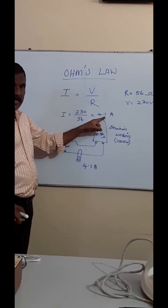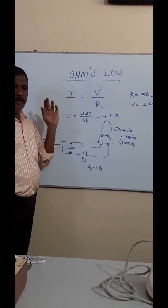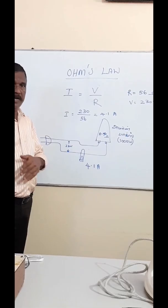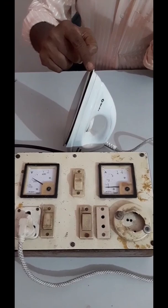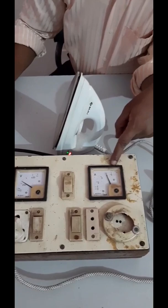We will get the iron box. Now, we will check the iron box. The calculated current for the iron box is 4.1 amperes. Now, we will verify this with the actual iron.